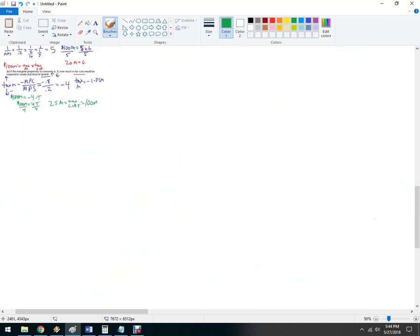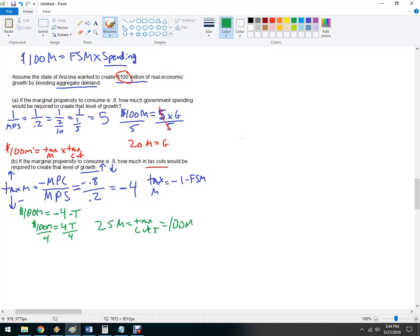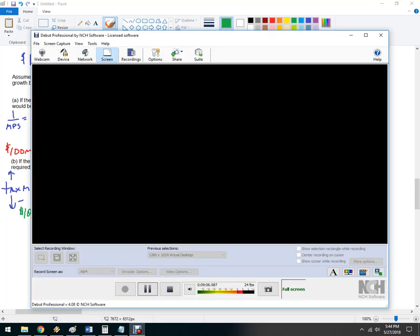So, you could also do a combination of both, and that's what governments do. They're trying to target economic growth, and so they work with the fiscal spending multiplier backwards. That's where they get these numbers from.